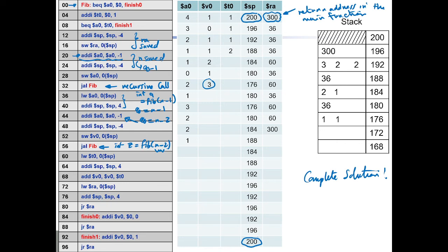Instead of that approach, you can do it exactly like the C code. In that case, you should first save A0 (before subtracting), and then subtract 1 from A0. In that case the second subtraction gives A0 minus 2, not minus 1.